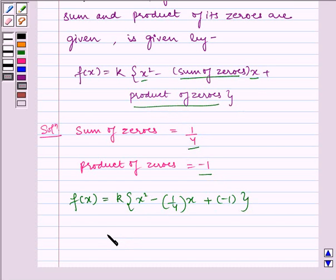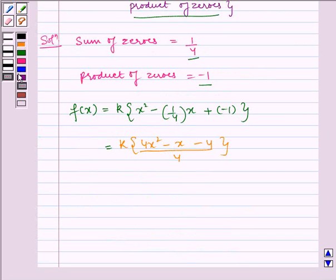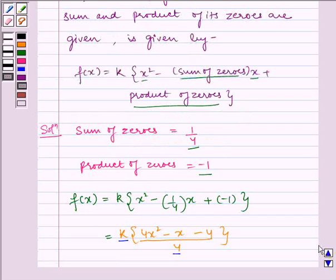Now, solving the equation we get k(4x² - x - 4)/4. This 4 gets cancelled by the constant if we take k as 4 to satisfy our given condition, the sum of zeros and the product of zeros.